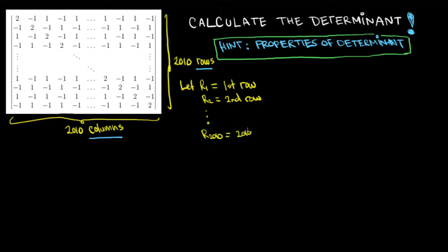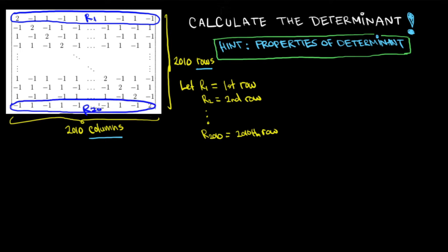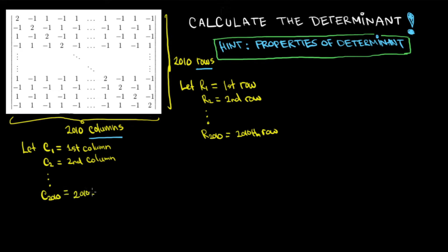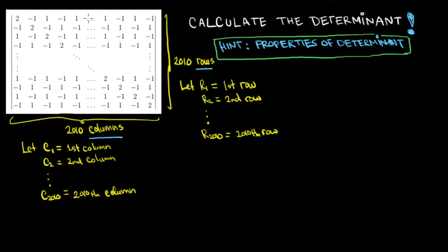We go until r2010, the last row. The top of the matrix is r1 and the bottom is r2010. Similarly, we define the columns: c1 is the first column, the leftmost, and c2 is the second column, continuing until c2010 is the last column. The leftmost is c1 and the rightmost is c2010. By this definition we can start computing the determinant using properties of the determinant.